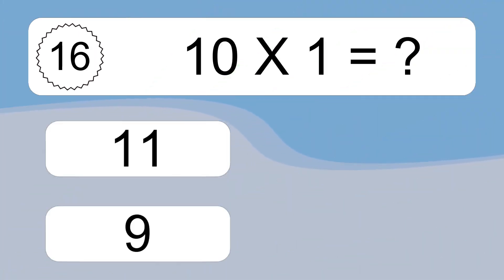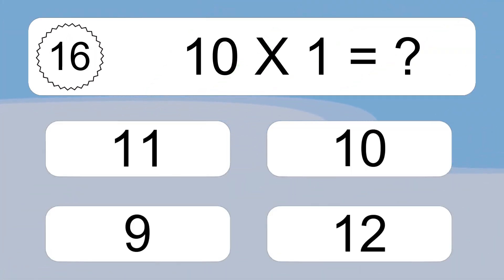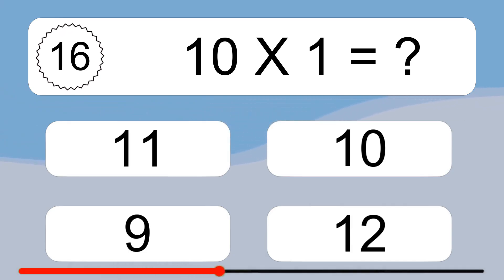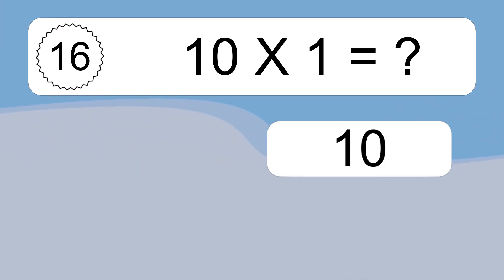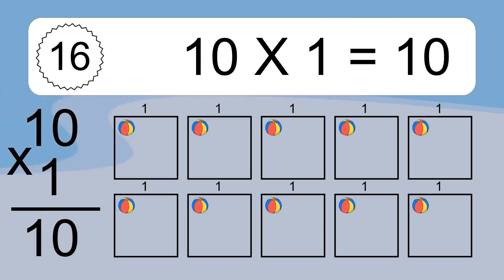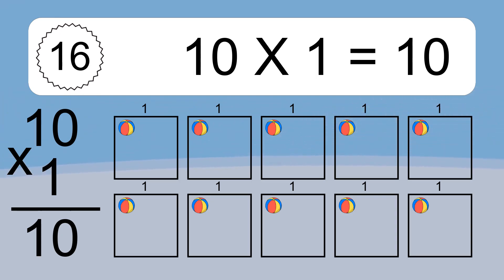10 times 1 equals what? 10 times 1 equals 10. We have 10 boxes, and each box has 1 colorful ball inside. If you count all the balls in all the boxes together, you will have 10 times 1 balls. This equals 10 balls.